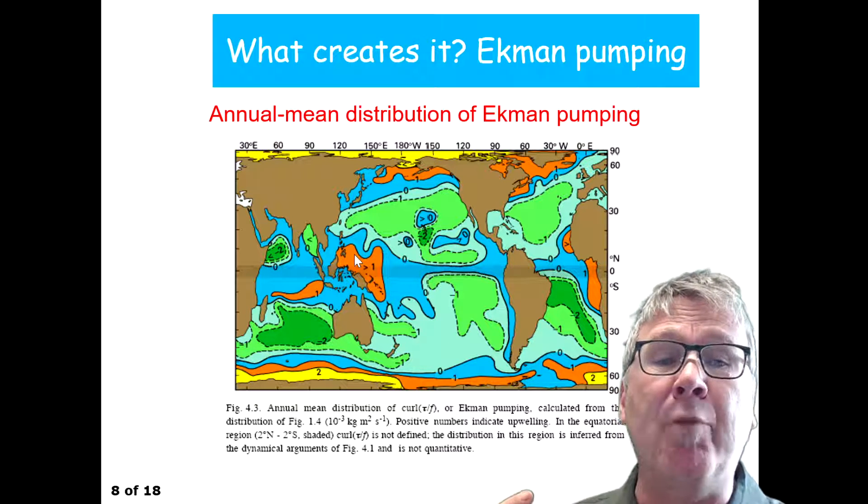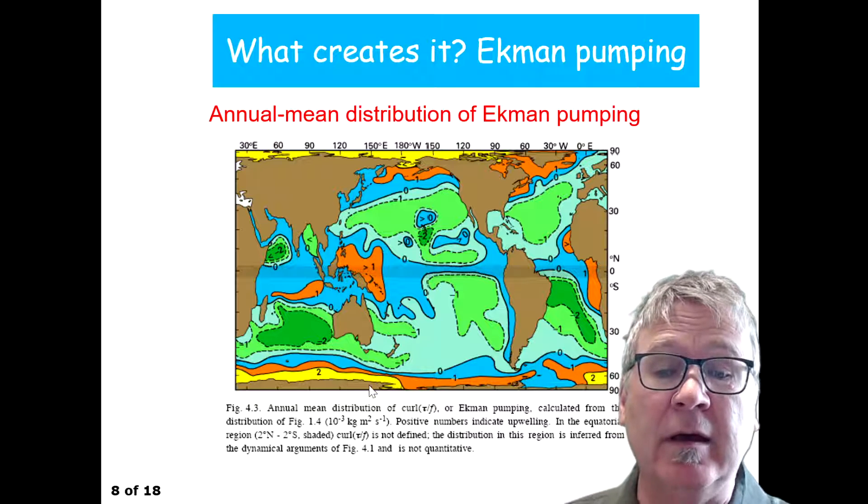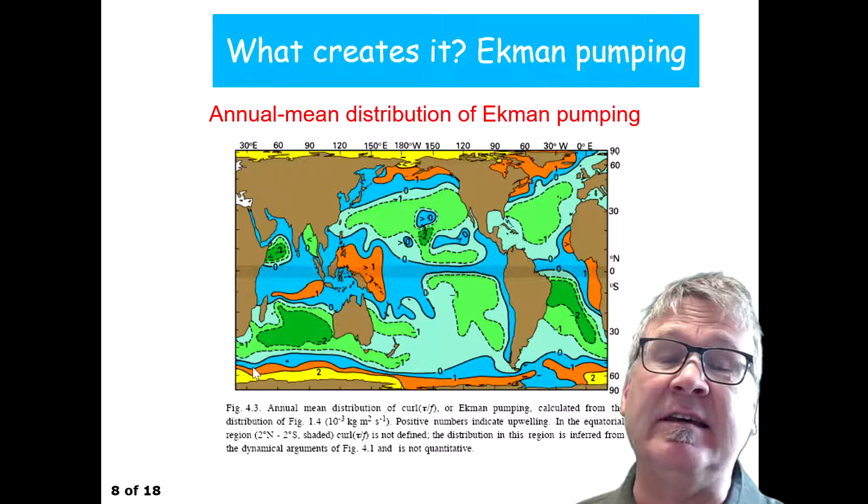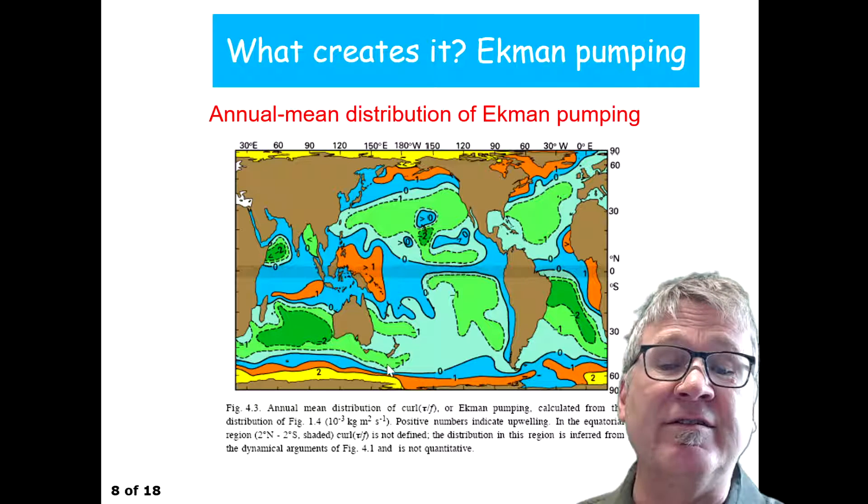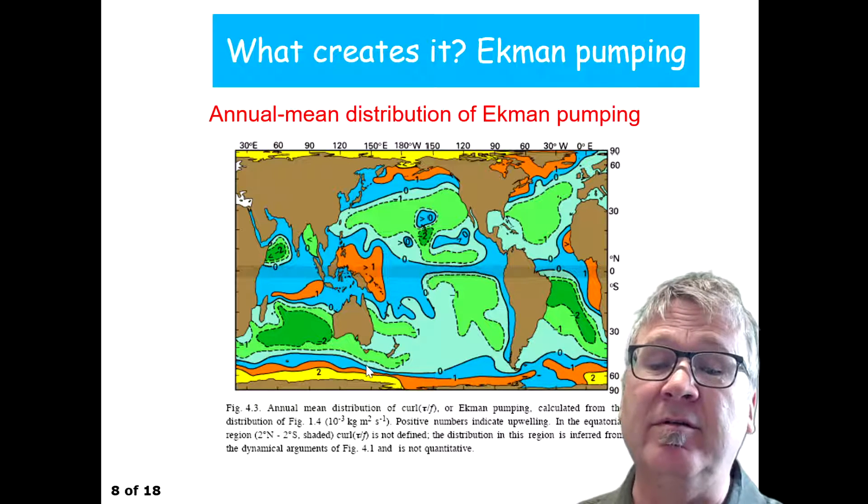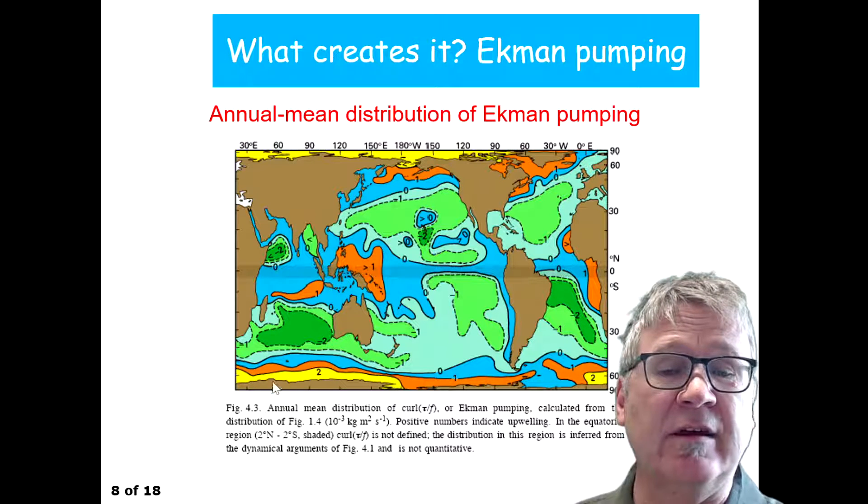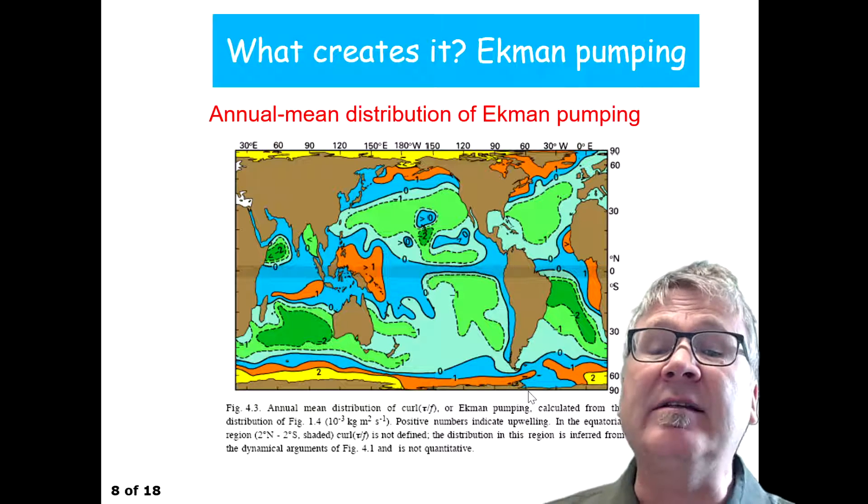where you have a positive number, and positive numbers here are in the Antarctic circumpolar current region. You can see that there are positive numbers all around, all along the southern ocean, and you can identify...